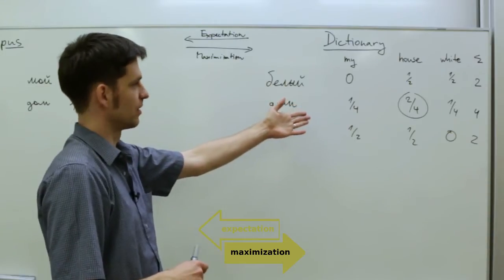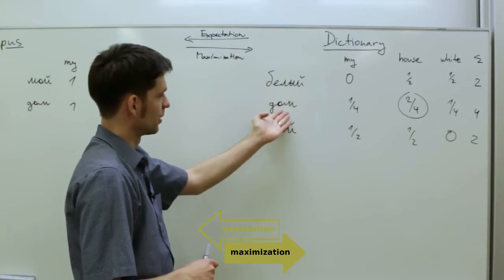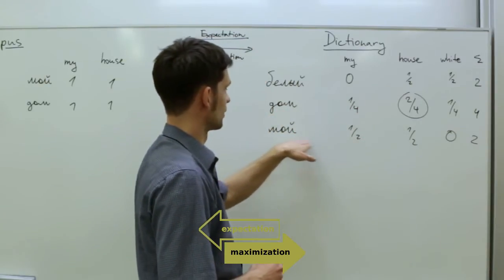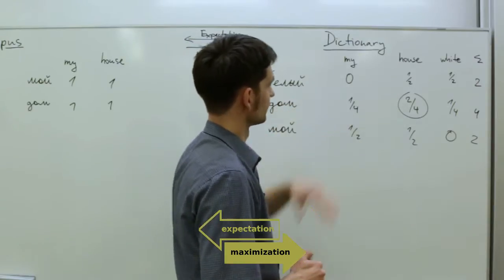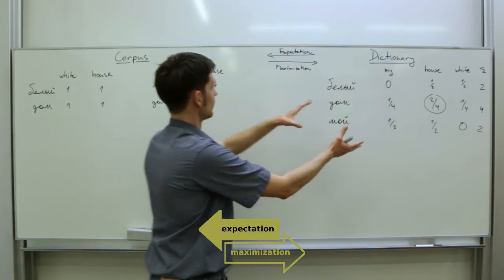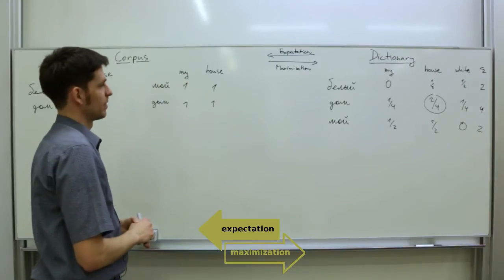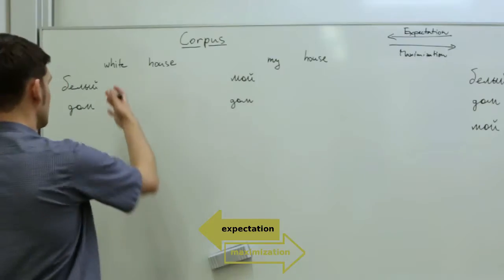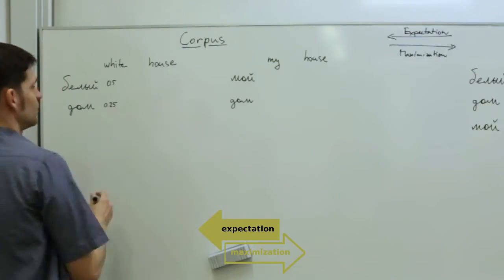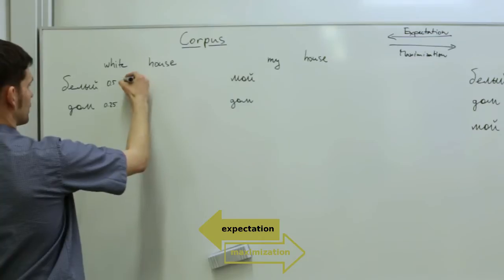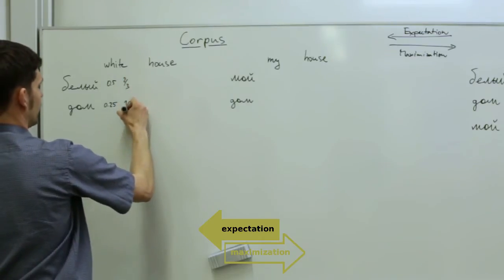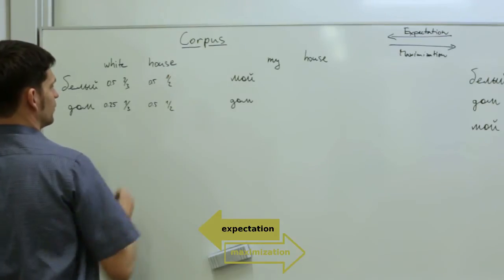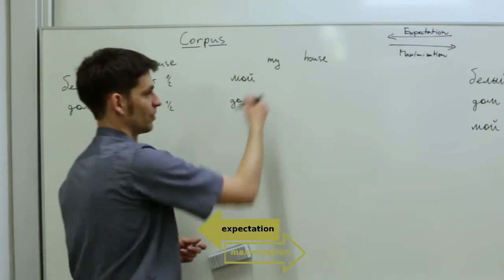And now we have a probabilistic dictionary, which is kind of certain about the translation of the word DOM. But it is very uncertain about the translations of the word MOI or the word BLE. Let's use this dictionary for the expectation step to update the probabilities of the alignments. We'll first copy the probabilities from the dictionary to the alignment table. If you normalize these scores, it will be actually two thirds and one third. We get one half and one half. Let's repeat the same thing for the second sentence.